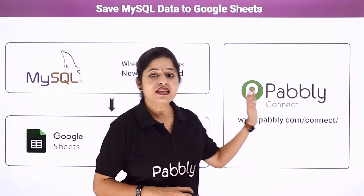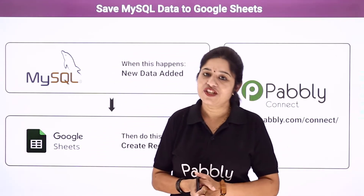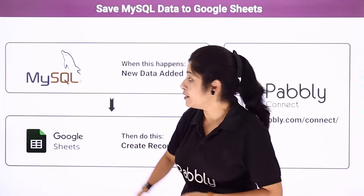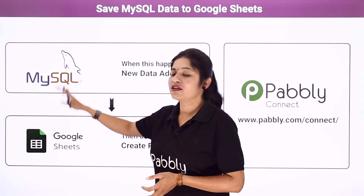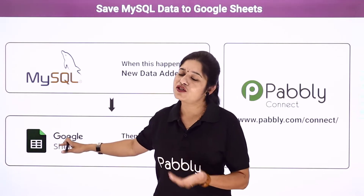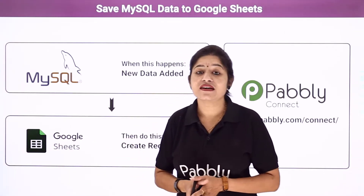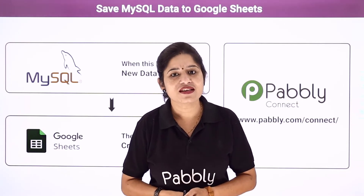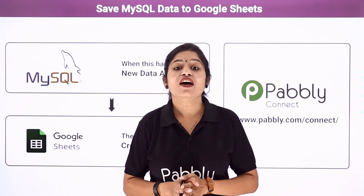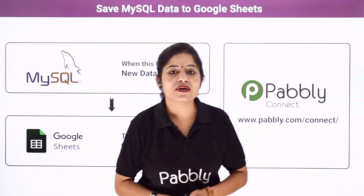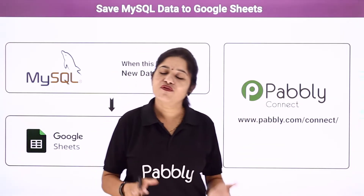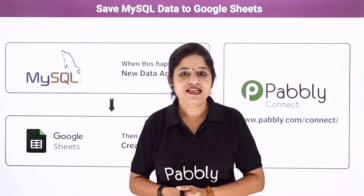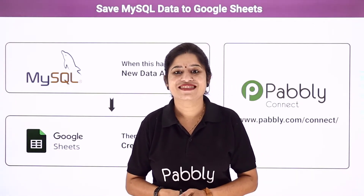In order to create a connection, we are going to use a software application named Pabbly Connect. Basically, Pabbly Connect is an automation and integration software which will help us in integrating MySQL with Google Sheets automatically. The best part is it doesn't require any coding skills or programming knowledge — even a non-technical person can use this application very easily. So let us learn the integration process now on my screen.